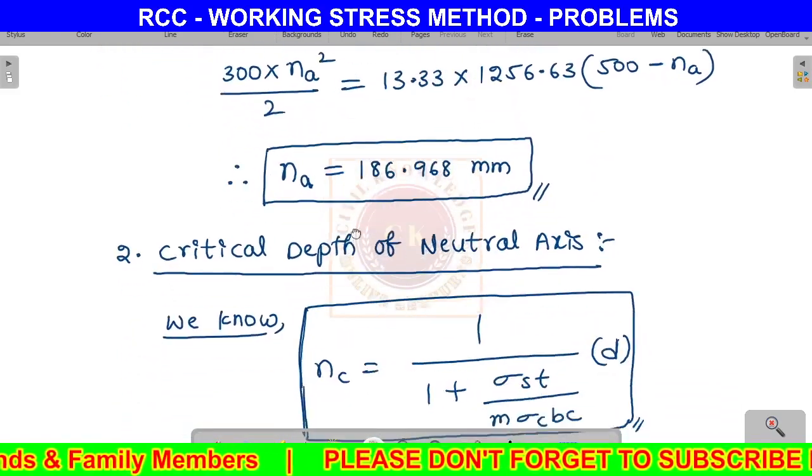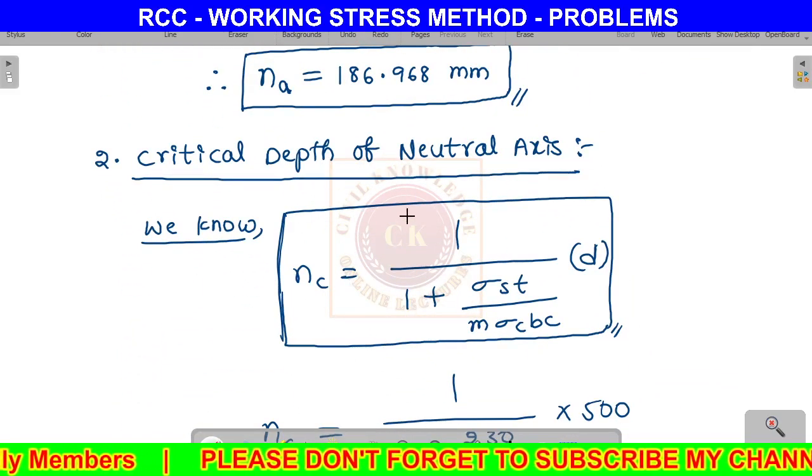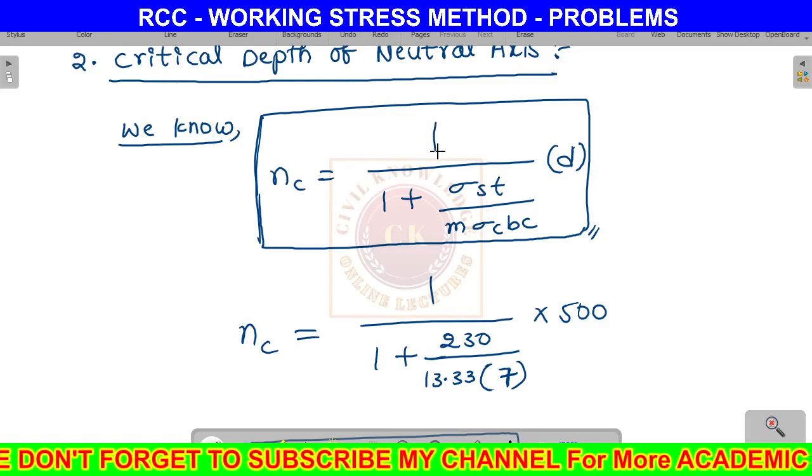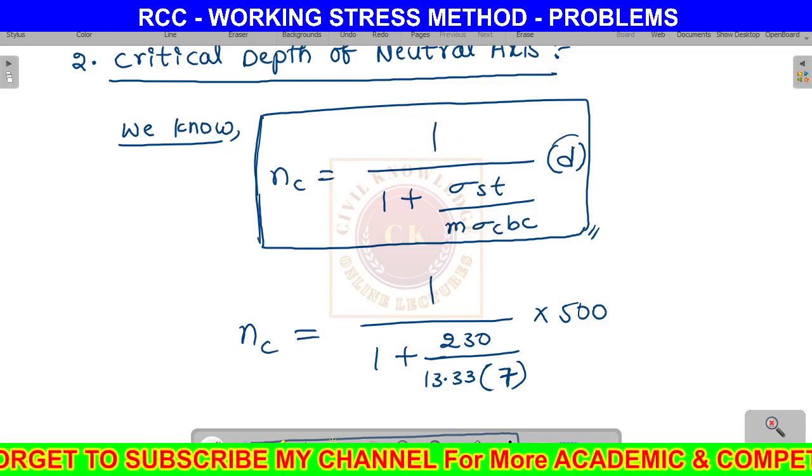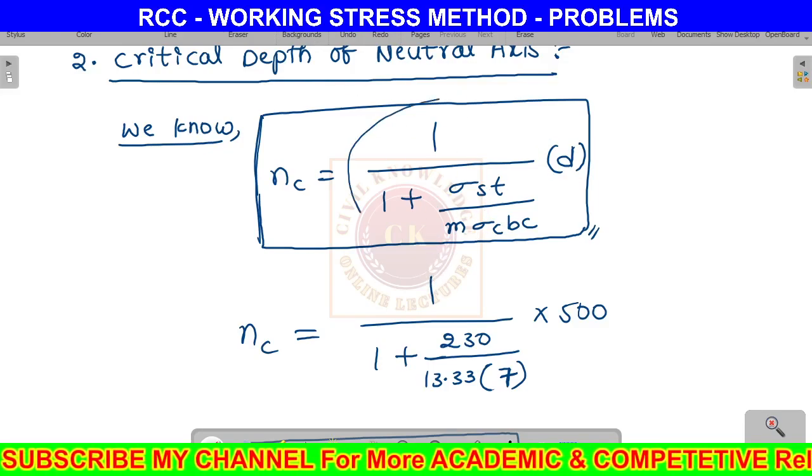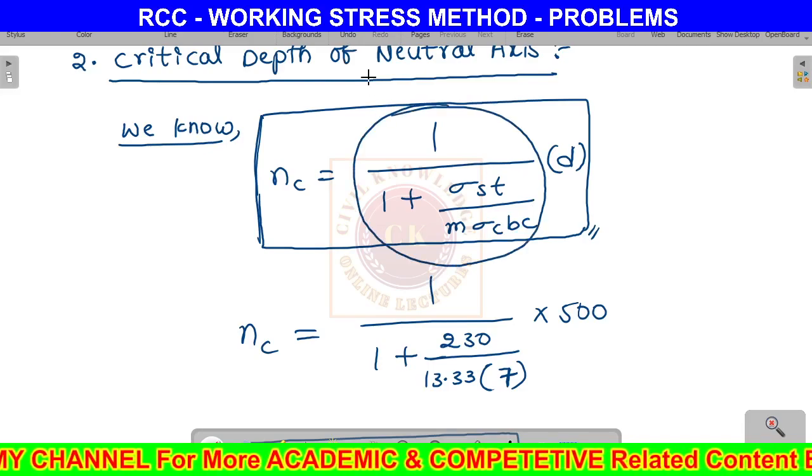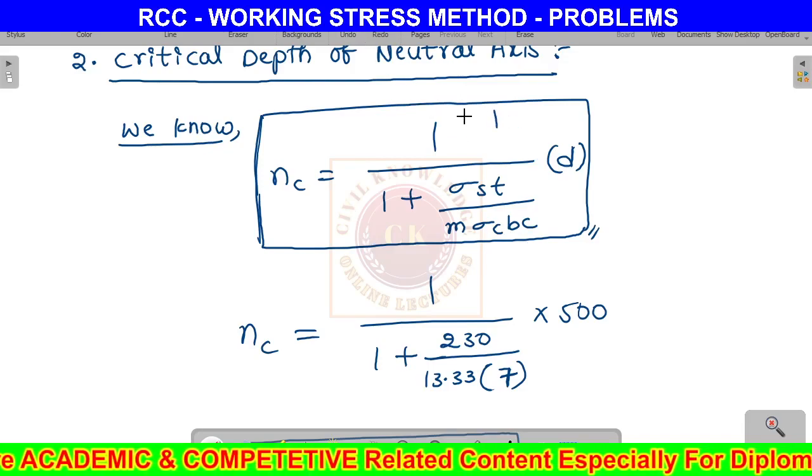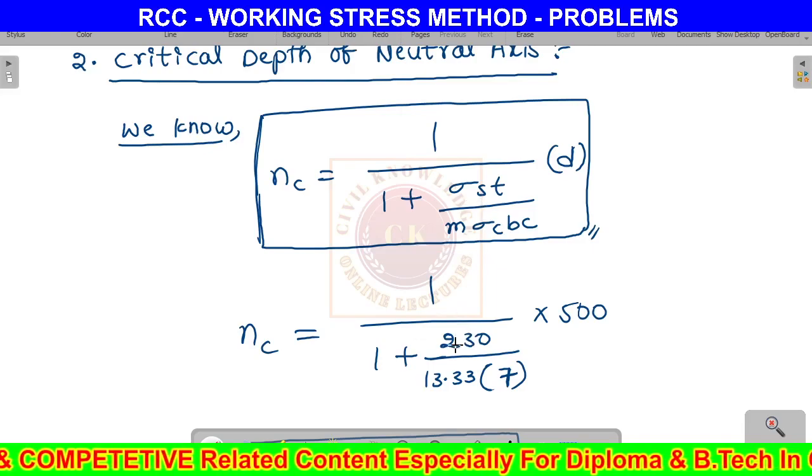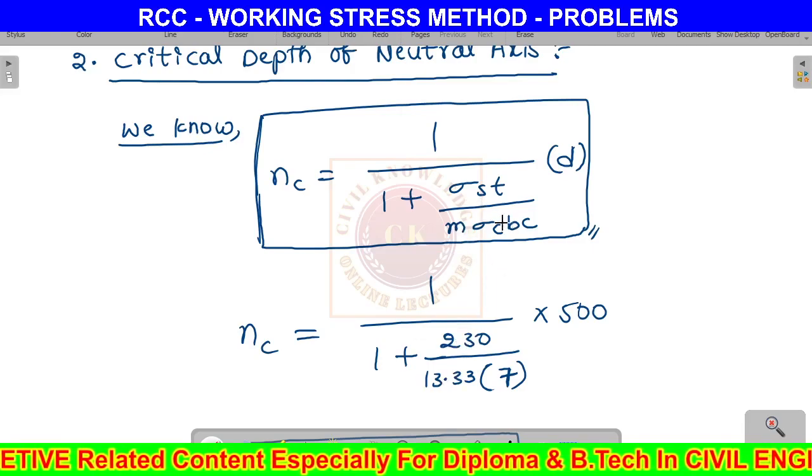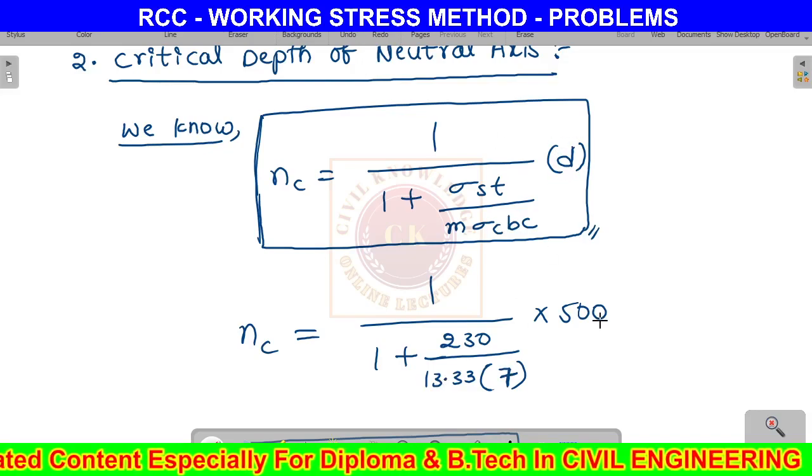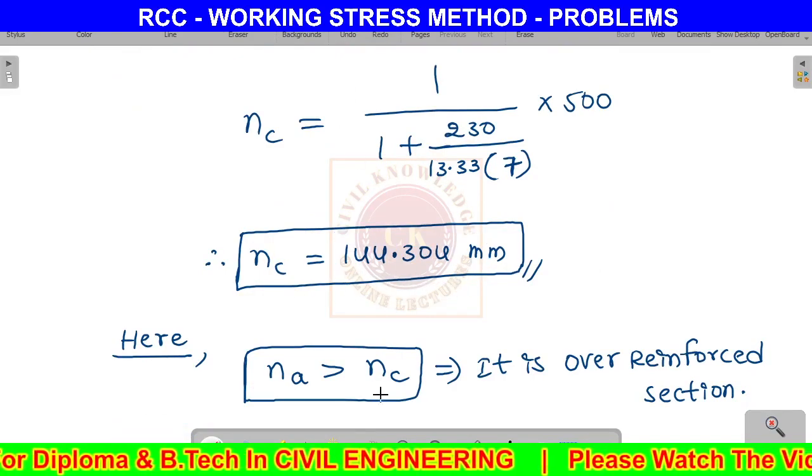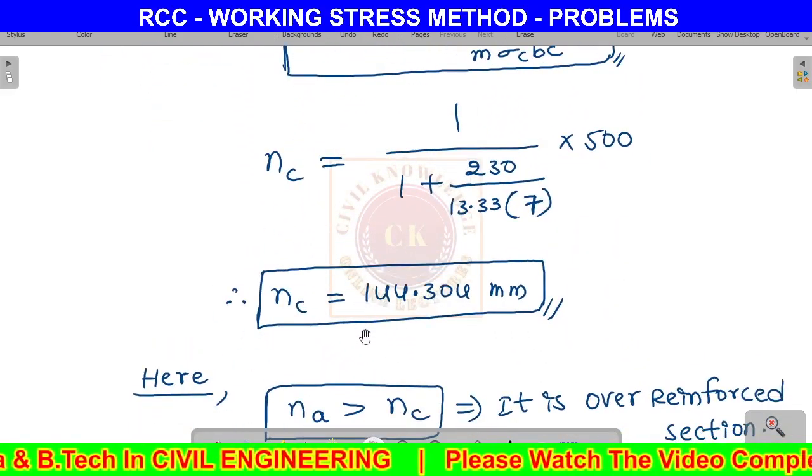Second step: find the critical depth of neutral axis. Critical depth nc equals 1 by 1 plus sigma st by m sigma cbc times effective depth d. This gives nc equals 144.304 mm.